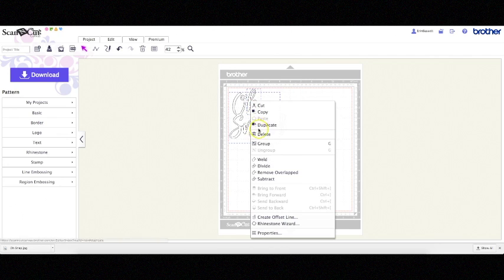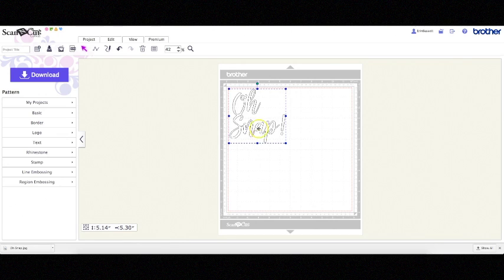Now to group them I'm just going to select all the words and exclamation points and then right click or you can go up to edit and click group and then you'll be able to move them anywhere on your mat.